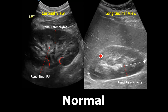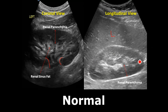In the longitudinal view, we have the liver and the right kidney above. We can appreciate the kidney — it has the outer cortex and the renal sinus, which are very well visualized in this picture.